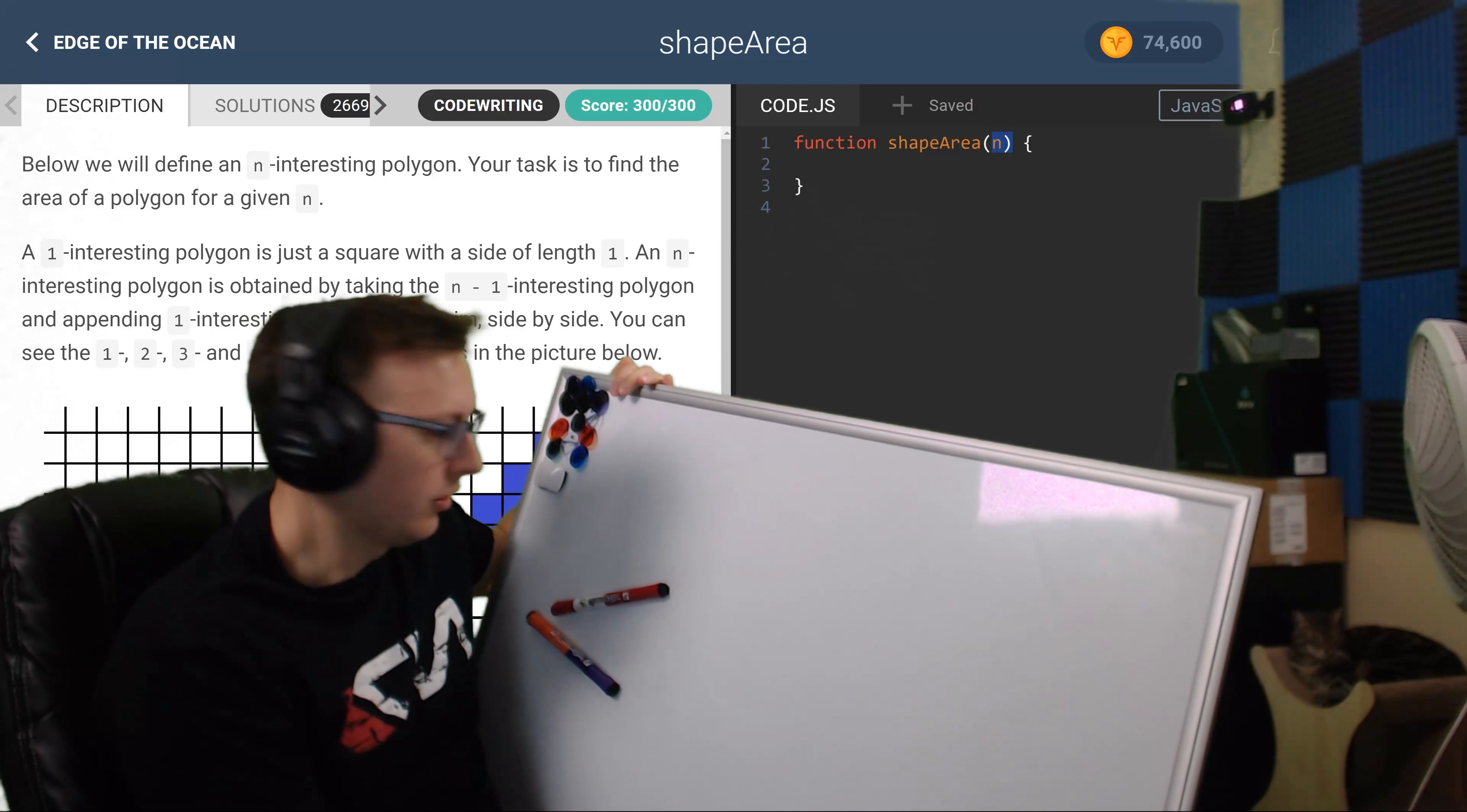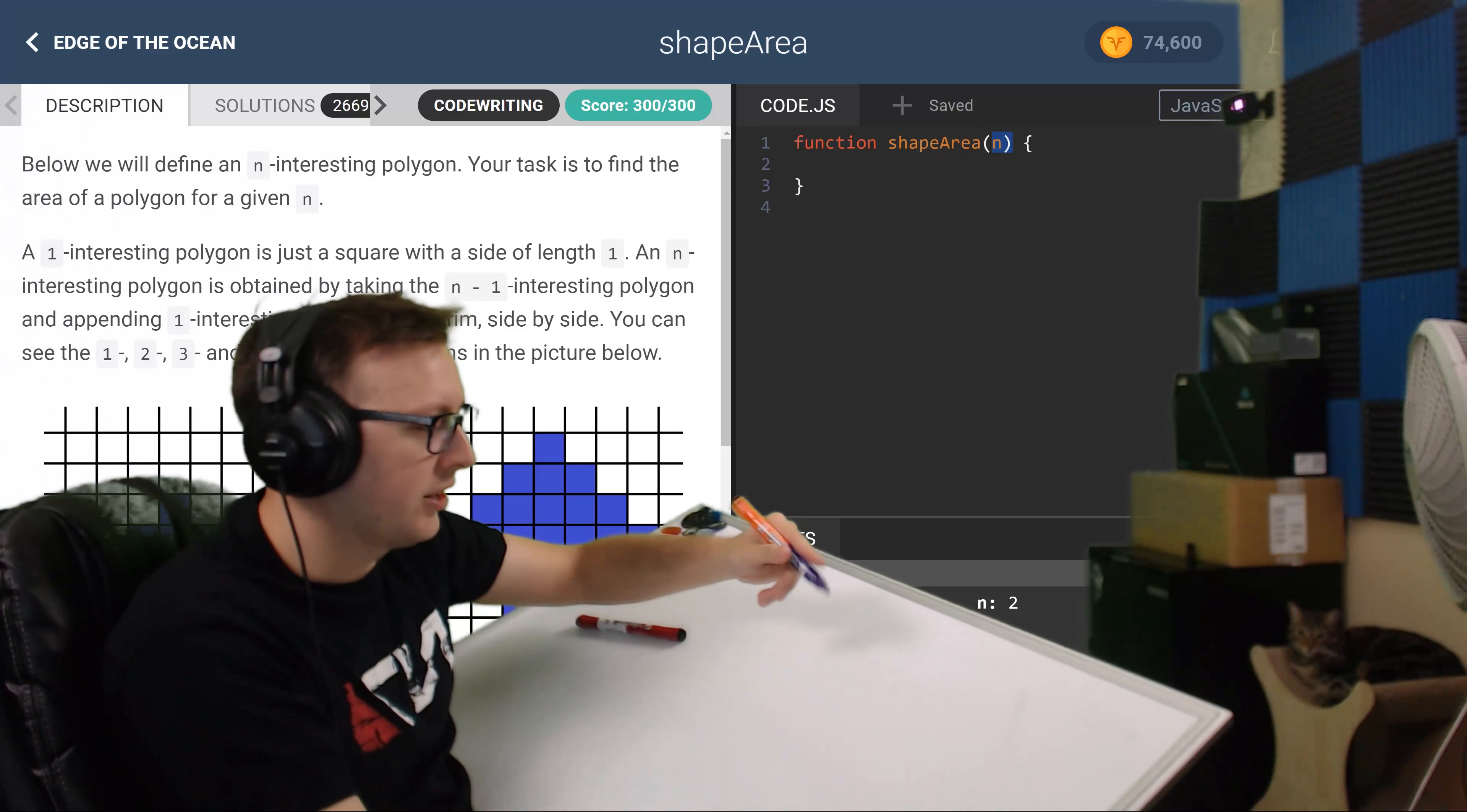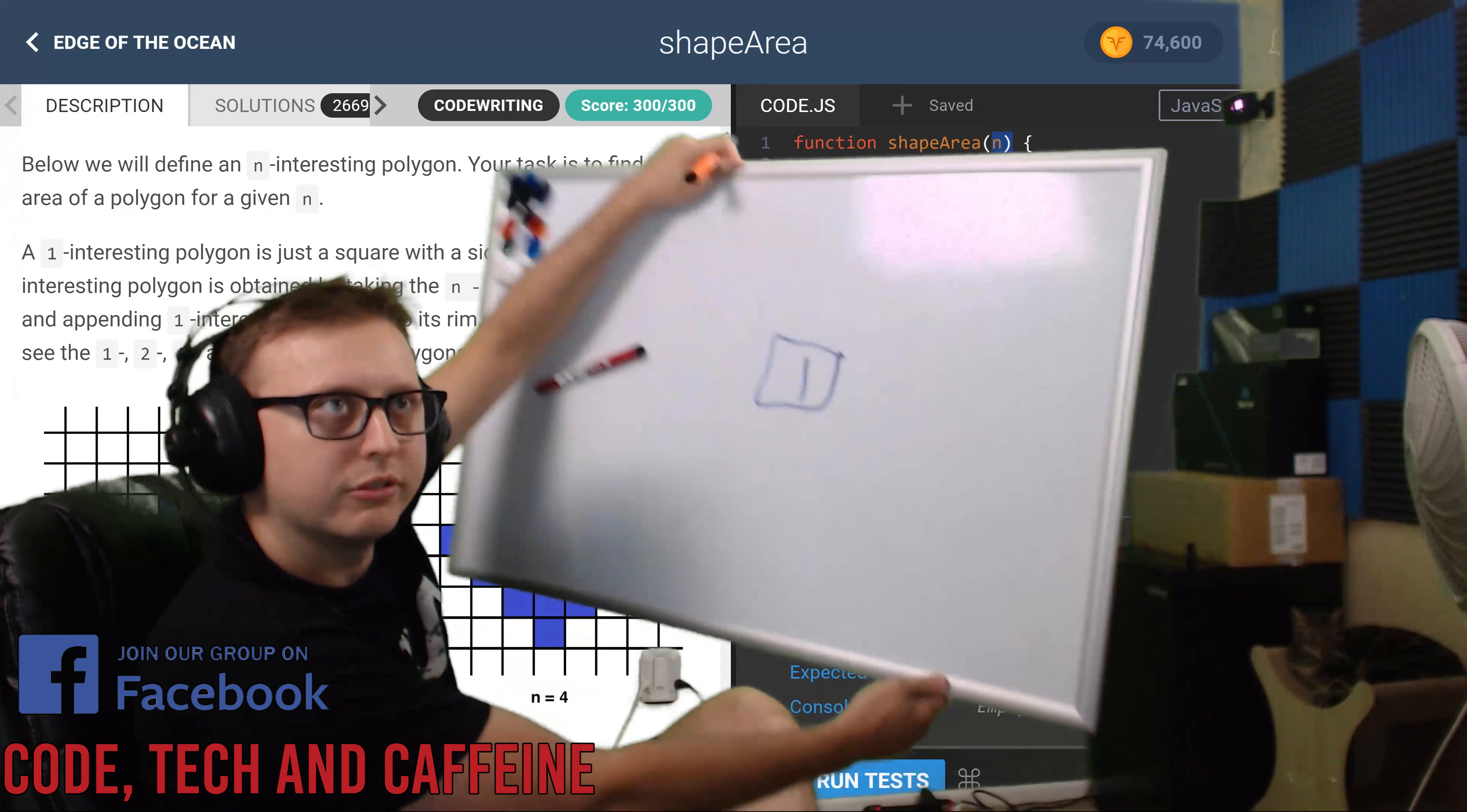Sometimes people say hey, how can I solve algorithms better? I'm really struggling. This is a great one to showcase how with just a couple colors we can fix this. So the first thing I do is I start drawing out. I want to see the difference. I want to visualize the difference of each one of these squares.